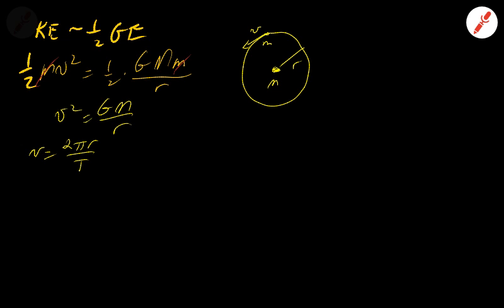Plugging this, essentially squaring it, squaring that, and plugging it into the speed equation, what we get is the following. I get the 2π turned into 4π², r² all over t², and that should be equal to GM over r.